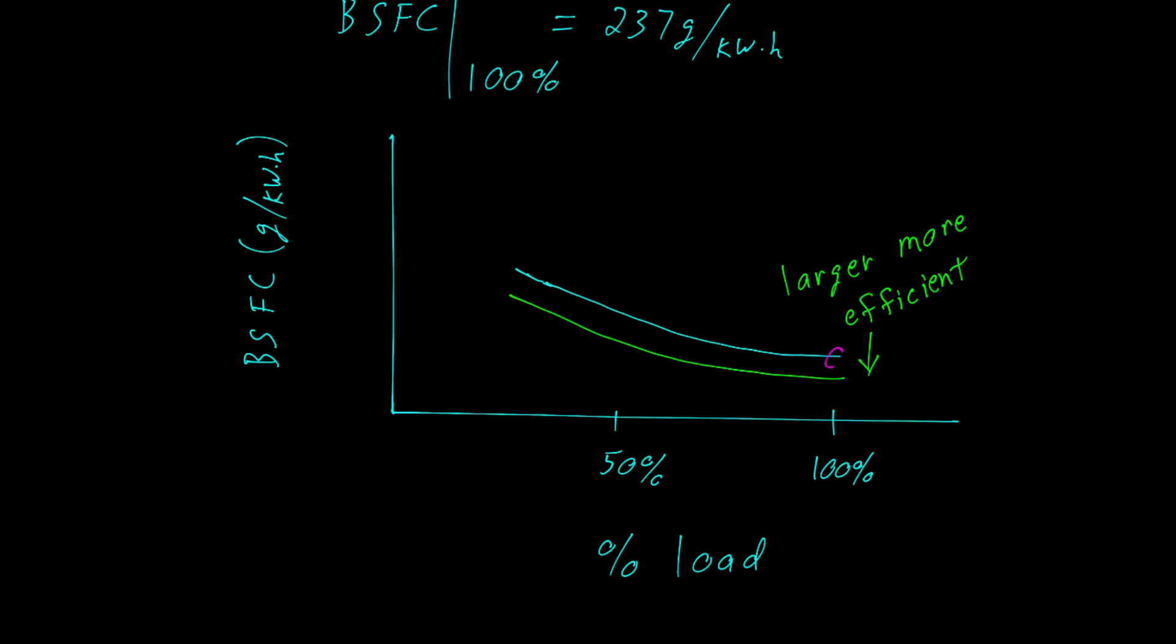Consider this. This is the operating point for our Cat 3406 engine while it's operating at 100% rated load. If we were to draw a horizontal line, which is to say we were to keep the brake-specific fuel consumption constant, and we walk that line to the left...